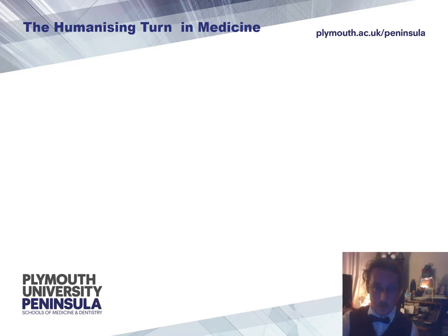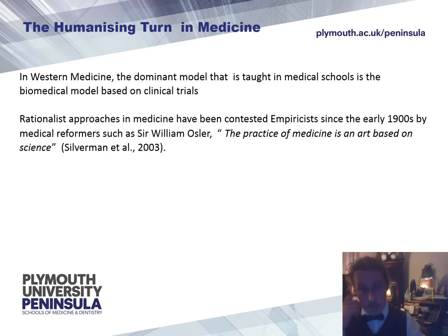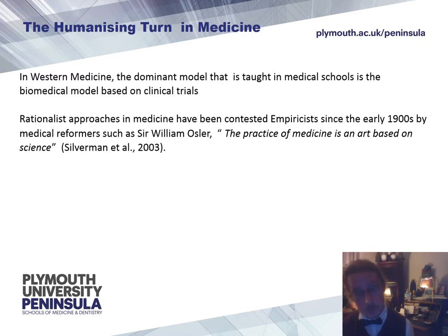So, what is the humanising turn in medicine? We want to reform medicine in a more humanistic way. In Western medicine, some of the dominant models have been the biomedical model, based on clinical trials. The problem was it tended to produce doctors that were a bit mechanistic, robotic, and didn't really factor in the emotional and cultural things in medicine — the dialogue with your patient, understanding them from an emotional, sympathetic point of view. Rationalist approaches in medicine have been contested. Even when I talked about Osler earlier, he said the practice of medicine is an art based on science — you're really meant to be both a biomedical scientist and a humanist in synchronicity to be a good doctor.